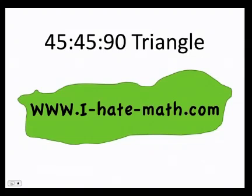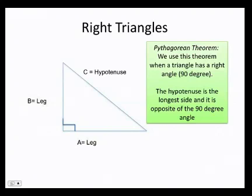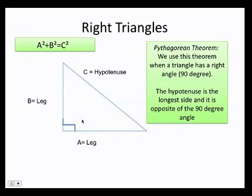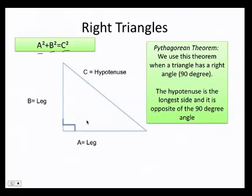Welcome back. In this video we're going to talk about one of the most important special triangles in geometry: the right isosceles triangle. But first, let's remember the basics about right triangles. When a triangle has a 90-degree angle, we can use the formula developed by Pythagoras: a squared plus b squared equals c squared. Anytime you have a right triangle, you have the hypotenuse and two legs. The hypotenuse is always the longest side and is always opposite the 90-degree angle.